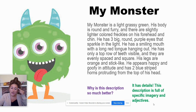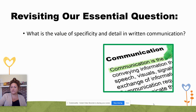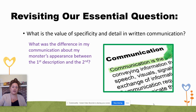So we're revisiting our essential question: what is the value of specificity and detail in written communication? Think about the difference in my communication about my monster's appearance between my first description and the second description. What was the main difference? That main difference was detail, imagery, vividness of my adjectives and descriptors, and also length.